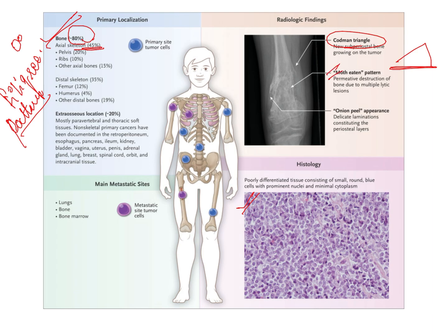Another radiographic finding is moth-eaten appearance, also seen in osteomyelitis — both early and late osteomyelitis can show a moth-eaten appearance of the bone. Additionally, onion peel appearance is also present, caused by the periosteal reaction where the periosteum starts growing in layers. This is also seen in osteosarcoma and Garré's osteomyelitis.